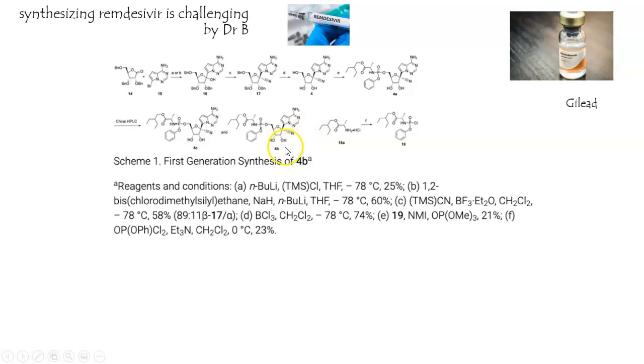In any event, it's also a prodrug, which is interesting, meaning that this whole part here is cleaved, rendering it with the active part of the molecule here in your bloodstream. So what you take is not what is actually active. And after that phosphonate ester is cleaved, you end up with this thing, which looks a lot like adenosine. But it's not. It's a little bit tweaked.